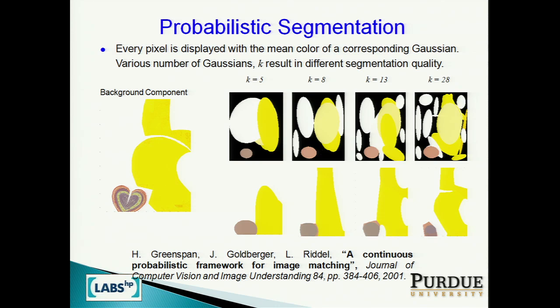Another visualization: by the maximum likelihood function, we can assign every pixel the color of its closest Gaussian. If we have five Gaussians, for example, the segmentation will have five colors assigned to each pixel. We can run this for as many Gaussians as we like. There is a big difference in number between 13 and 28 Gaussians, but in terms of segmentation there is not a lot of difference. We end up with between 10 and 15 Gaussians in our mixture model for this application.